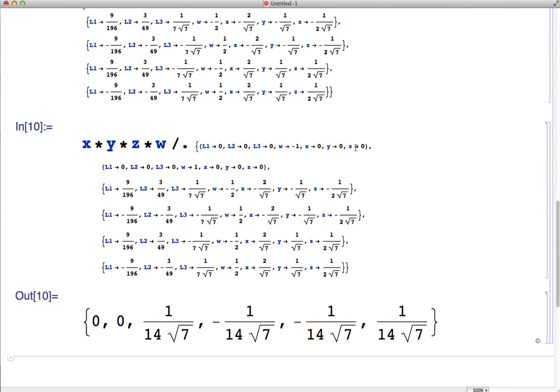So the first one was zero, like I thought. And then it also computes the next five inputs. So we can see here the maximum of f is 1 over 14 times the square root of 7, which occurs twice. And then the minimum is this minus 1 over 14 times the square root of 7, which